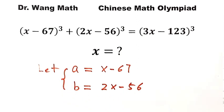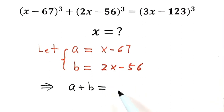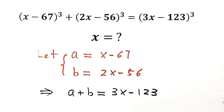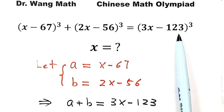So let's see a plus b. A plus b equals 3x minus 123. So now you see, we said this one is a, this one is b, then here is a plus b. So this allows us to rewrite this equation as follows.